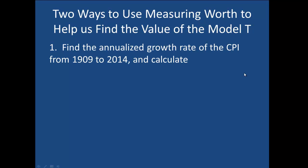The formula looks like this. Here, what we need to find is G, the annualized growth rate of the CPI — that's, on average, how much did prices rise each year? Then we need to compound that by the number of years between 1909 and 2014. This N stands for the number of years.